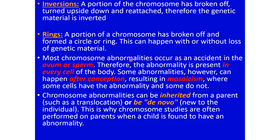Most chromosomal abnormalities occur as an accident during the formation of sperm or ovum. The abnormality is present in every cell because if a defective ovum or sperm is fertilized with the other gamete, the zygote will contain 47 or 45 chromosomes, and every cell resulting from that zygote will contain that abnormal number — these numbers will be present in each and every cell of the body.